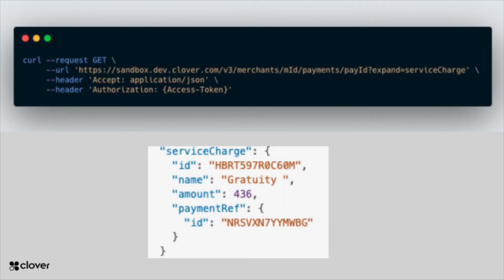These are screenshots of where you might see the service charge from a REST API call. The REST API is expanding the payment to show the service charge. The JSON response will display the expanded service charge with its UUID, name, and the amount it was charged, and also another reference to the payment ID.